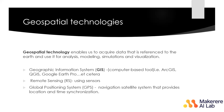Another example of geospatial technology is remote sensing. For remote sensing, you detect and monitor the physical characteristics of an area without making physical contact with the object. You typically use sensors, and it is mainly used by researchers to collect information about Earth.